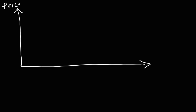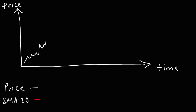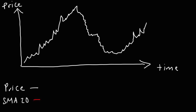Now let's create a graph with the stock price on the y-axis and time on the x-axis. I'll indicate the price in white and the SMA 20 — the 20-day simple moving average — in red. Let's say the price of the stock goes up, then decides to go down, and then goes back up. The simple moving average is going to follow the price curve.